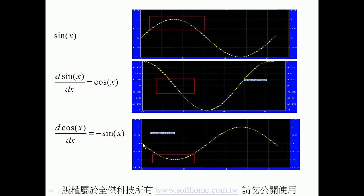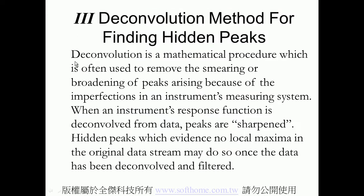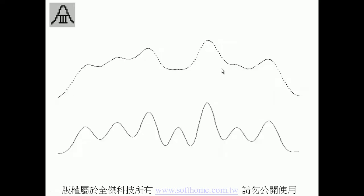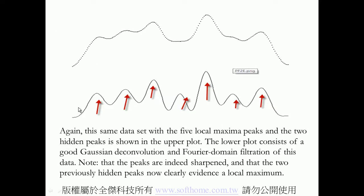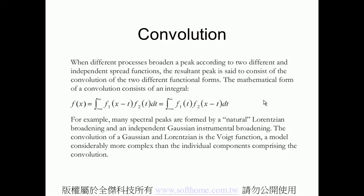This is the reason we can use the second derivative method to find a hidden peak. The third method is the deconvolution method. In the mathematical method, when we use the Laplace transform, you will encounter this method. This is the original data, and this is the deconvolution result — it very easily and automatically finds every hidden peak.